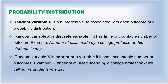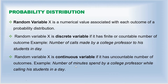There are also random variables called continuous variables. A random variable is called continuous if it has an uncountable number of outcomes. For example, the number of minutes spent by a college professor while calling his student in a day — the value of x can be 2.3 minutes, 2.4 minutes, or 5.2 minutes. It can take decimal values and everything in between, giving uncountable outcomes. Such a random variable is called the continuous random variable.